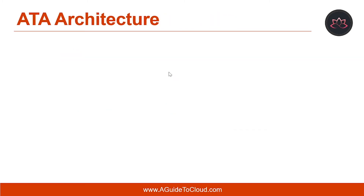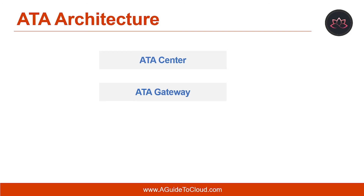Now let's talk about ATA architecture. Advanced Threat Analytics consists of three major components: ATA center, ATA gateway, and ATA lightweight gateway. ATA center is the management center to observe and evaluate suspicious activity recorded by the ATA gateways. ATA gateway is a standalone server with no other services running — it collects and investigates network traffic from mirrored ports and is hard for an attacker to detect. The ATA lightweight gateway is an additional service for domain controllers that can inspect event logs for abnormal behavior, but is more easily detectable for an internal attacker.